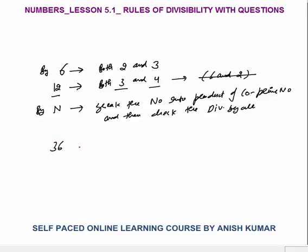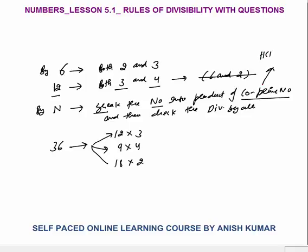What about 36? How do we check if a number is divisible by 36? 36 is 12×3, 9×4, or 18×2. We must break it into co-prime numbers. Co-prime numbers are those whose HCF is 1 — there should be no common factor among the numbers.